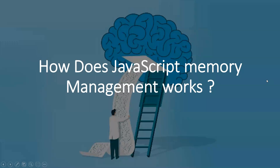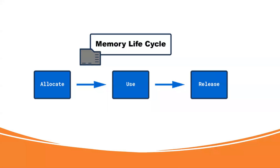Let's discuss how JavaScript memory management works. The term memory management involves two things: how memory is allocated and how we release the memory. We are going to see that in a memory lifecycle.